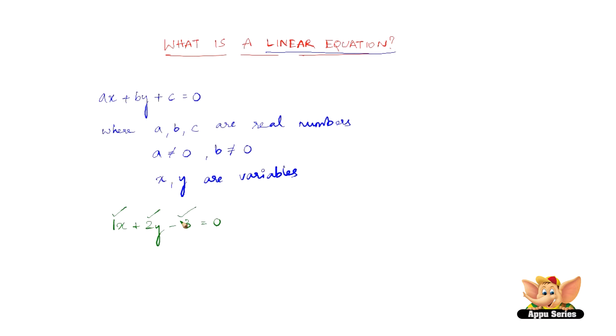We also can write this in a slightly different form. We can write it as ax plus by equal to c. This also qualifies to be a linear equation. It's just that we have shifted c to the right hand side.